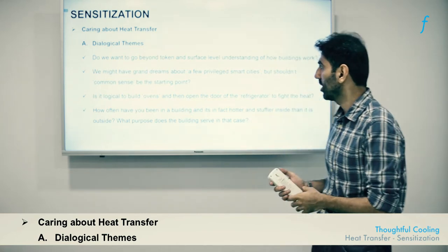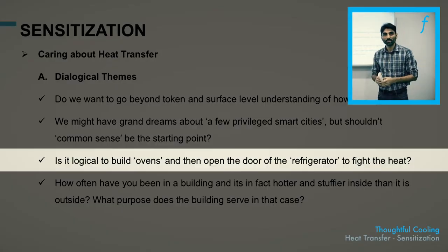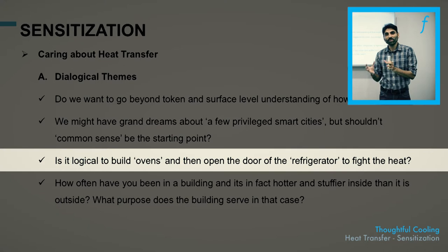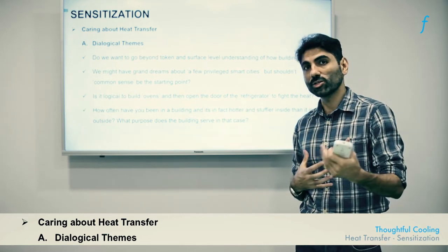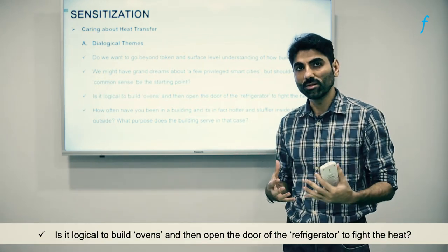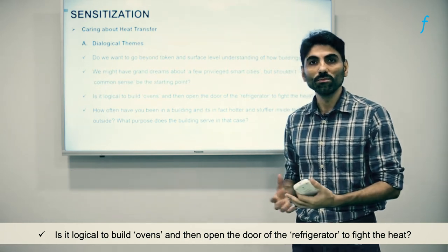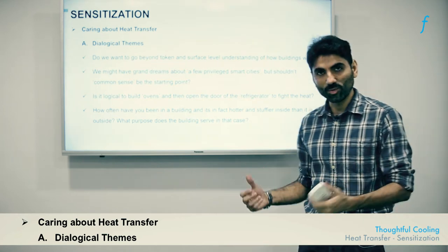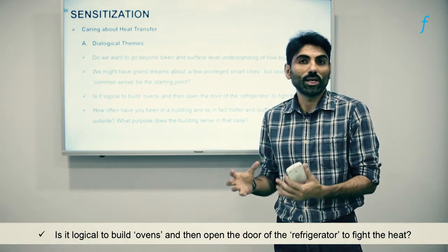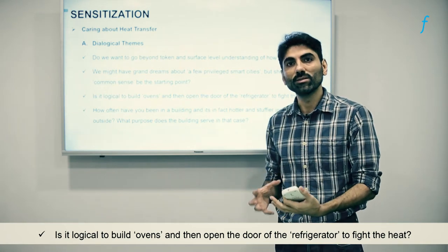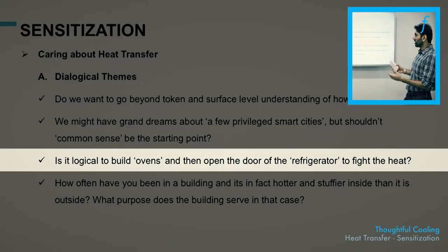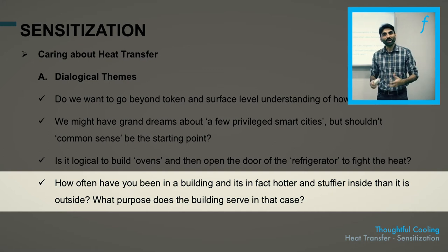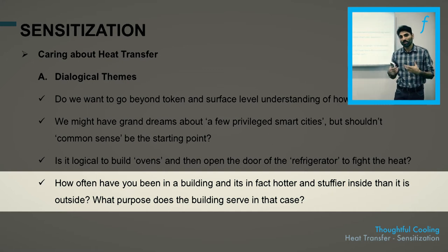A third debate idea would be to question the logic of building buildings which are part oven and part refrigerator. A building with a glass facade in a tropical climate will actually function as an oven, storing heat from the sun. To battle it, what we often do is turn on an air conditioner, which is like a refrigerator that constantly fights the oven. This is essentially a building in crisis.